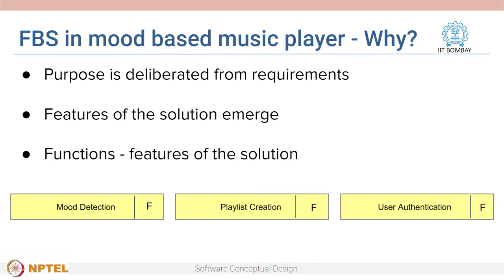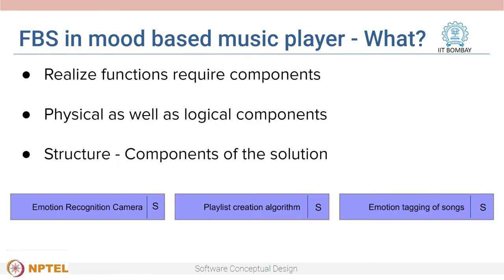The purpose of software design is often deliberated from the requirements — this is the why. After deliberation, the features of the solution are envisaged, mapping to the requirements; these features are called functions — this is the what. For a mood-based music player, functions could include mood detection, playlist creation, and user authentication. To realize the functions, physical as well as logical components are required; these are called structures — this is the how. Examples include an emotion recognition camera, algorithms to automatically generate playlists, and emotion tagging of songs.